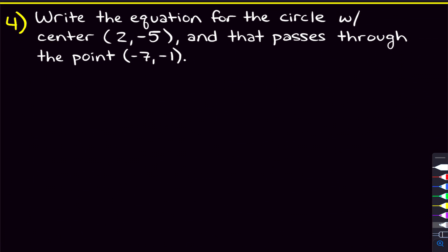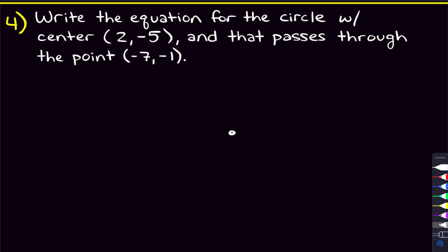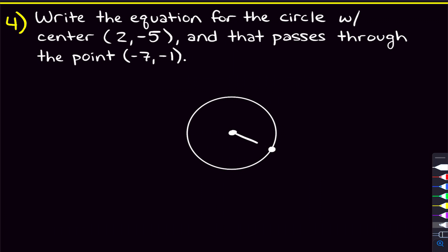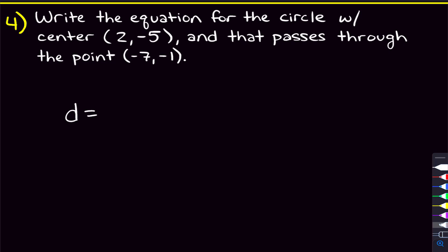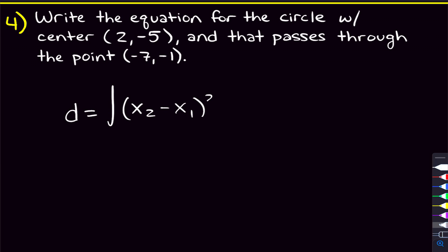We've written an equation given center and radius, but now we're given the center of the circle and a point it passes through: negative 7, negative 1. We have the center but need the radius. The radius is the distance between the center and the point on the circle, so we use the distance formula: d equals the square root of (x2 minus x1) squared plus (y2 minus y1) squared.